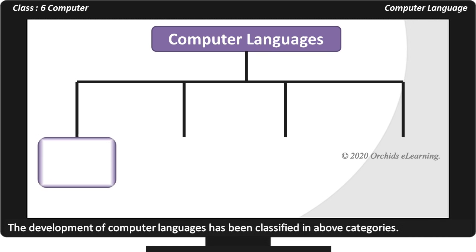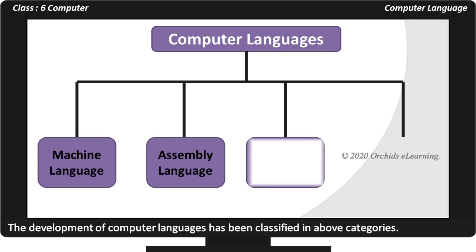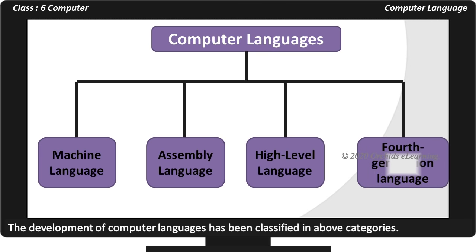The four categories are: Machine Language, Assembly Language, High Level Language, and Fourth Generation Language. Let us learn more about each.